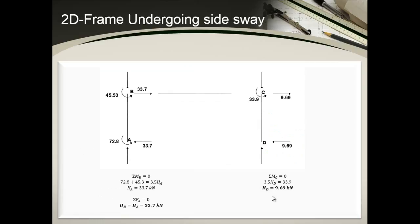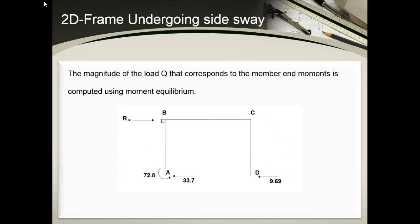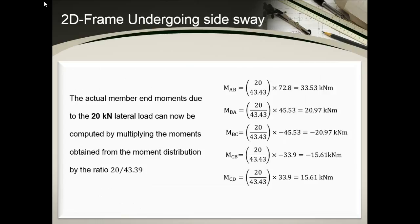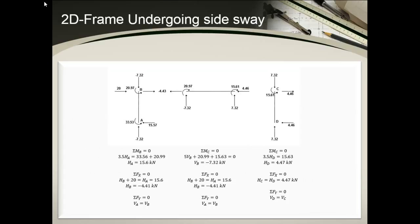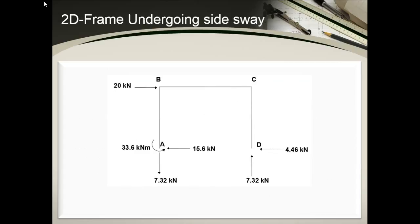We then apply the computed moments and compute the resulting horizontal reactions. The magnitude of the load that corresponds to the member end moments is computed using moment equilibrium. The actual member end moments due to the 20kN load can now be computed by multiplying the moment obtained from the moment distribution by the ratio of 20 over 43.39, where 43.39 was the load obtained from the previous computations. Using equilibrium equations, we can then compute the forces and moments in the frame.